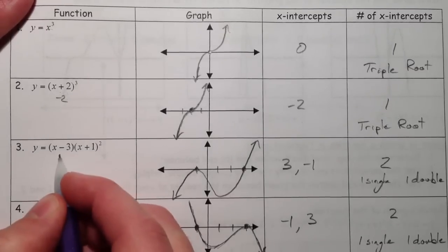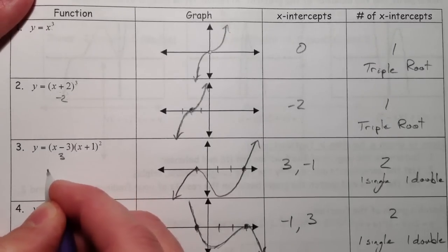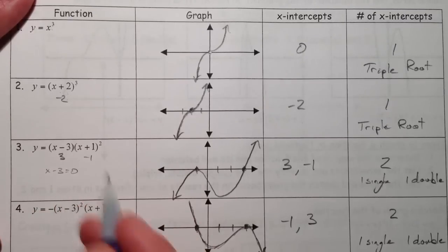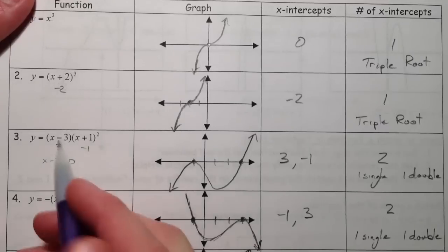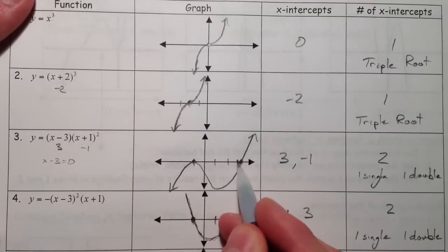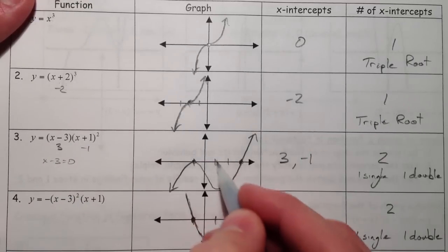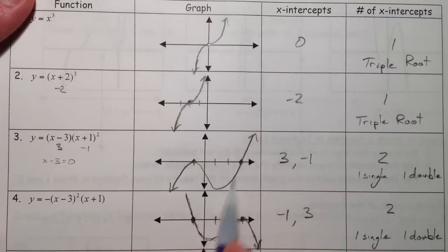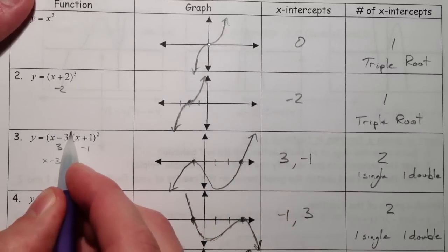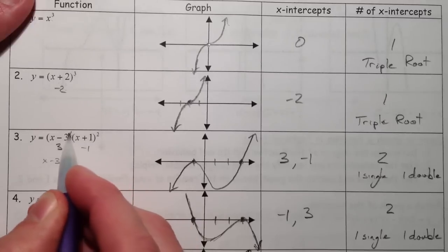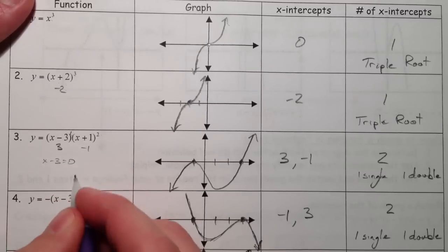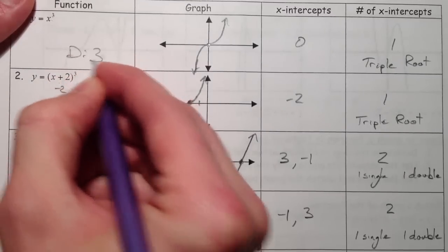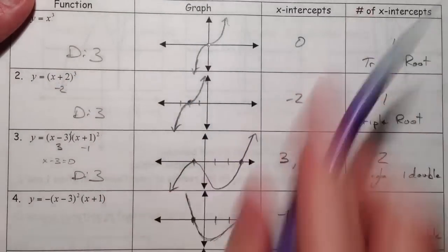This graph has an x-intercept at three, because x minus three equals zero, and at negative one. Notice that the end behavior still works the same way, just like a positive line. This is degree one, two, three — so the degree is three and it's rising to the right.